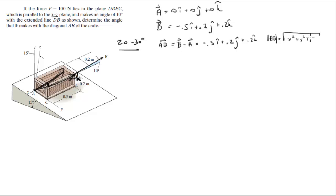So when you plug in those three values you're going to get that the magnitude of this vector is 0.574.